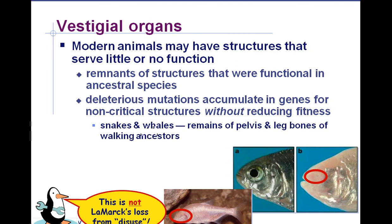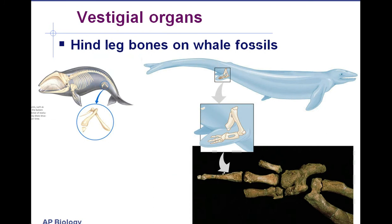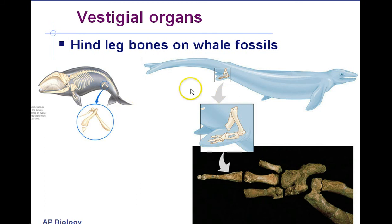Snakes and whales also have the remains of pelvis and leg bones of their walking ancestors. The human tailbone is four fused vertebrae of what probably was once a tail in our ancestors. Some whales still have the femur and hip bones located within the body, yet there are no legs attached to them — remnants of the legs of ancestors they evolved from, and we have those fossils. There is more survival advantage to being streamlined, but once these bones are inside the body of the whale, it's not really a negative. Mutations resulting in the bones not forming as well still don't reduce the fitness of a whale, because the whale's shape remains streamlined since the bones are on the inside.